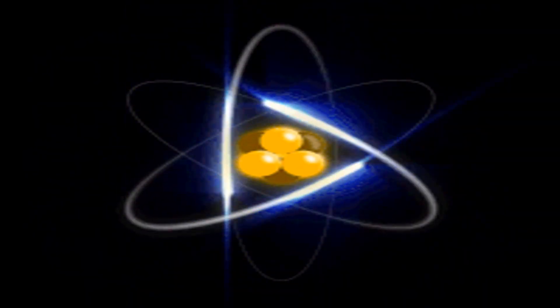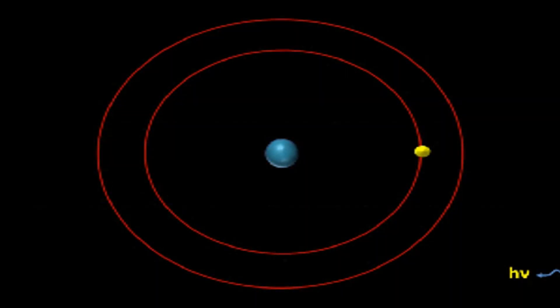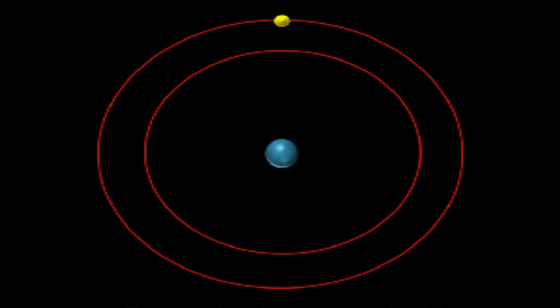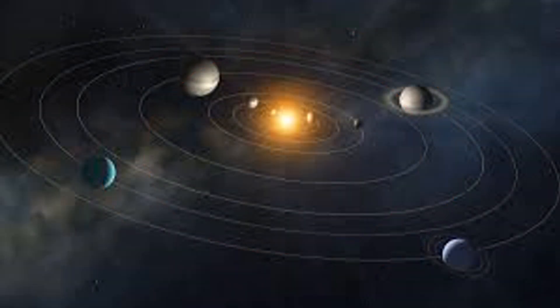This electron leap, which leads to the absorption or release of a photon, is what I shall be addressing in this video and then use the same reasoning on solar systems to explain the graviton.